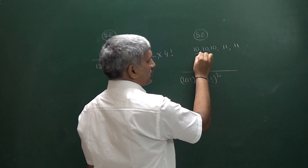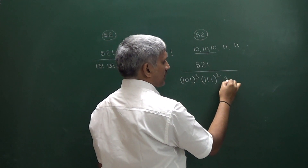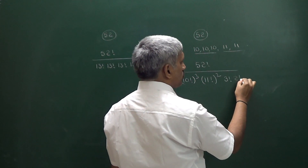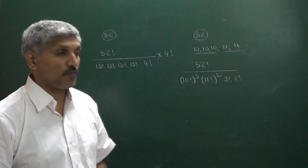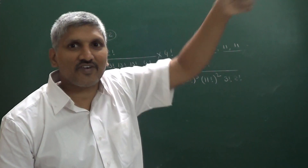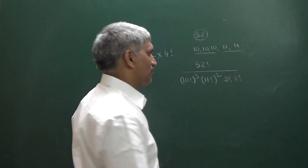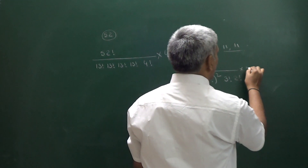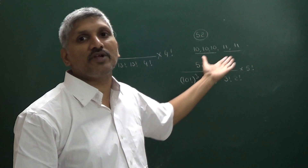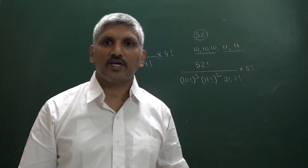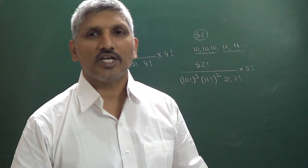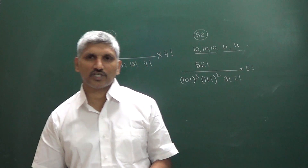Because there are 3 equal groups of 10, we divide by 3 factorial. And there are 2 equal groups of 11, so we also divide by 2 factorial. Suppose you want to distribute these 5 groups to 5 different players, then we multiply by 5 factorial, because these 5 groups can be distributed to 5 different players in 5 factorial ways.